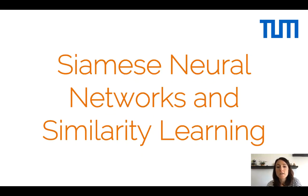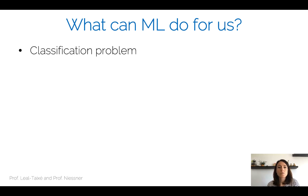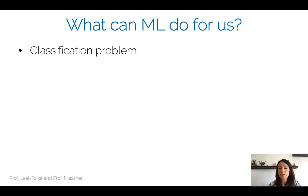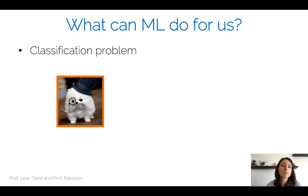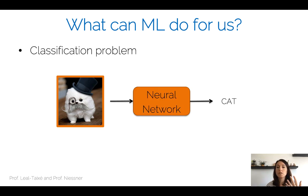Welcome to the lecture on Siamese neural networks and similarity learning. So far we have seen at I2DL and also at the beginning of ADL4CV several problems tackled with machine learning and in particular with deep neural networks. Machine learning is actually really good for classification problems, and we have seen the standard problem in computer vision which is image classification. You have as an input an image, for example showing a cat, you pass it through a neural network and it gives you the label cat, classifying the whole image.